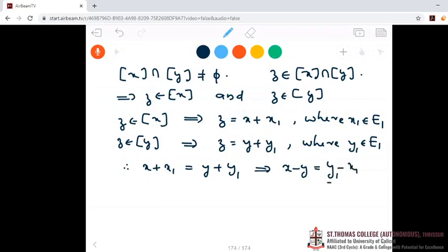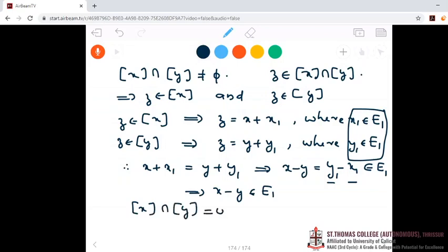But this Y1 and X1 are elements of E1. So Y1 minus X1 is in E1 since E1 is a subspace, so it is closed under scalar multiplication. So this means X minus Y is an element of E1. So class X intersection class Y not equal to phi implies X minus Y is an element of E1.